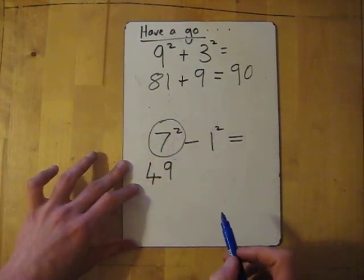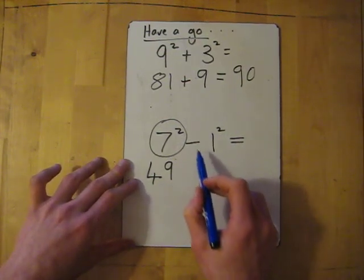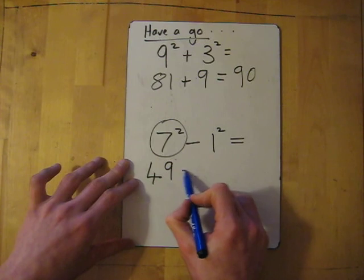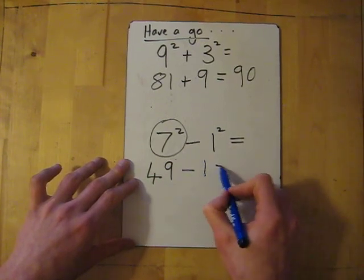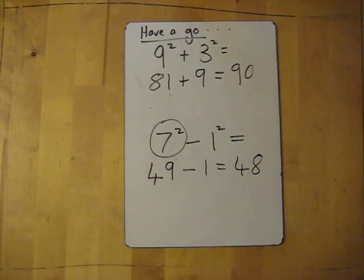A way to remember: 7 times 7, porcupine 49. You could use it or not, it's up to you. Take away 1 squared, so 1 times 1 is 1. That one's very straightforward: 49 take away 1 is 48. Now you go.